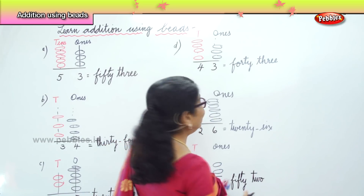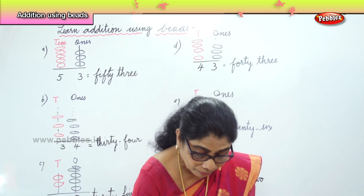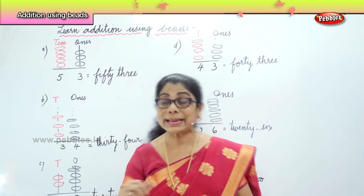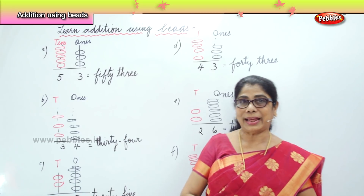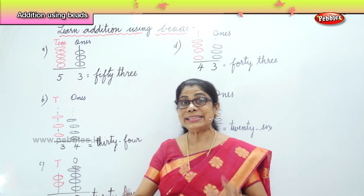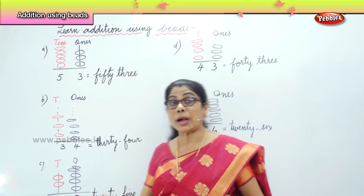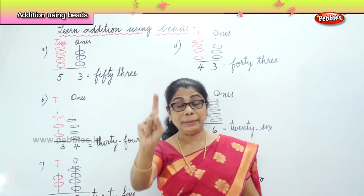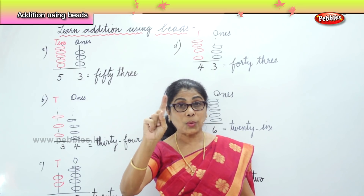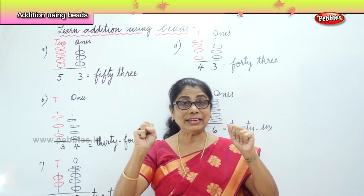What did we learn today? We learned to add using beads — tens and ones. In the tens, we have red beads. Every bead is ten. In the ones place, you have blue beads. Every single bead is one. You count it as one, two. But if it's a red bead, then we say ten, twenty, and so on.